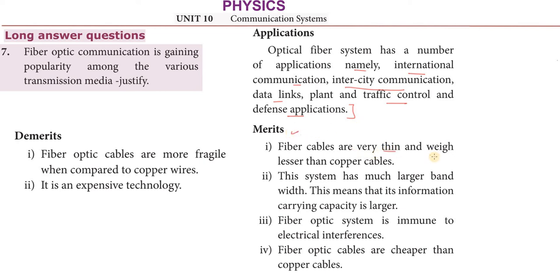The merits of fiber optic communication: fiber cables are very thin and weigh less than copper cables. This system has a much larger bandwidth, meaning its information-carrying capacity is larger — this is the main merit. Fiber optics systems also have immunity to electrical interference, so there is no loss due to electrical interference.